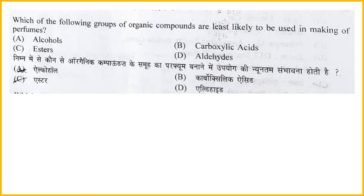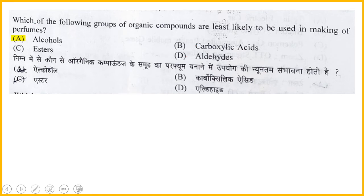Next question science ka hai - in mein se kaunsa organic compound hai jiske sabse kam chances hain ki use perfume banane ke liye use kiya jaaye? Options hain: alcohol, ester, carboxylic acid, aldehyde. NCERT 6th se 10th ki basic question hai. Answer hai alcohol - alcohol is not used for making perfume. Other three - ester, carboxylic acid, aldehyde - are used for making perfumes and cosmetics.